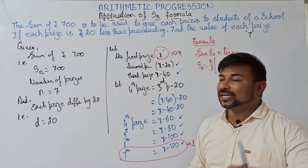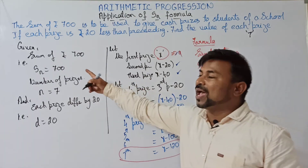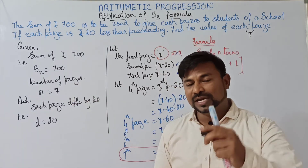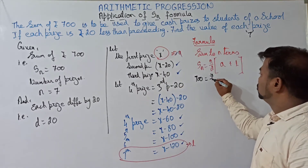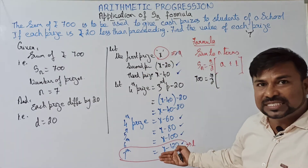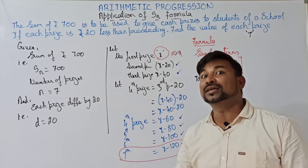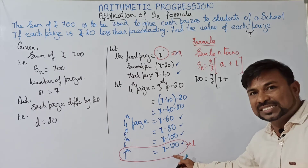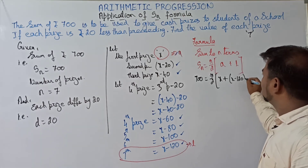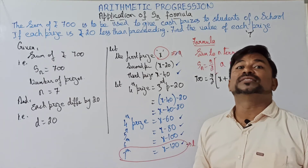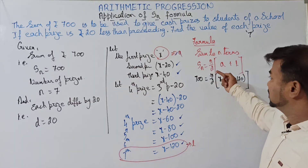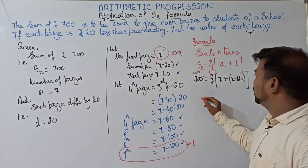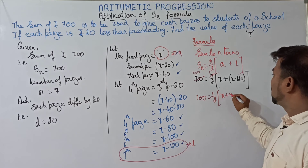Let us substitute the values. Sn is 700, so 700 equals n by 2 — n is 7 — so 7 by 2 into a plus l. The first term a is X and the last term is X minus 120. So we have: 700 equals 7 by 2 into (X plus X minus 120). Simplifying: 100 equals 1 by 2 into (2X minus 120), after dividing both sides by 7.